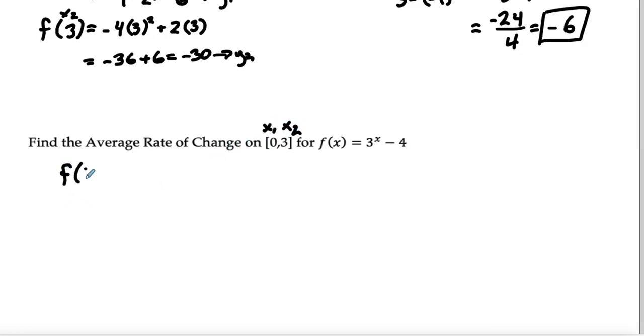x1 and x2, I'm going to input 0, my x1. And remember, 3 to the 0 is just equal to 1. So that's 1 minus 4, which equals negative 3. That is going to be my y1.